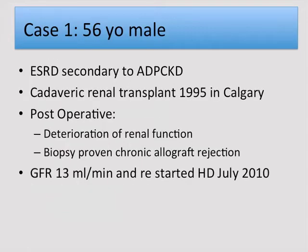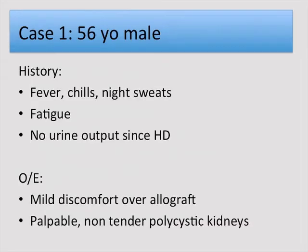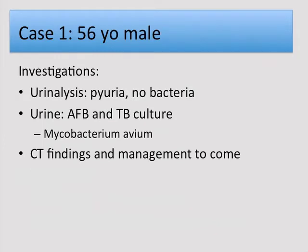Case one: a 56-year-old male with end-stage renal disease secondary to autosomal dominant polycystic kidney disease. He received a cadaveric renal transplant in Calgary in 1995. Postoperatively, he had deterioration of renal function with chronic allograft rejection. In July 2010, he was restarted on intermittent hemodialysis. He presented a few months later with fever, chills, night sweats, and fatigue. He had made no urine since starting hemodialysis. Exam showed mild discomfort over the allograft and palpable non-tender polycystic kidneys. Urinalysis showed sterile pyuria, urine microscopy for AFB was positive, and TB culture grew Mycobacterium avium.